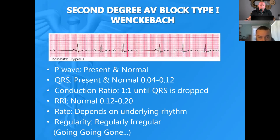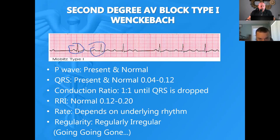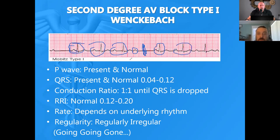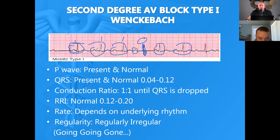Second degree type one: we always look at the PRI interval. It looks pretty normal on the first beat, then it's getting longer, then even longer. Then we have a P wave with a missing QRS complex — going, going, gone — and the pattern restarts. That's a second degree type one: a varying PRI until you get a P wave with a non-conducted QRS. Going, going, gone.